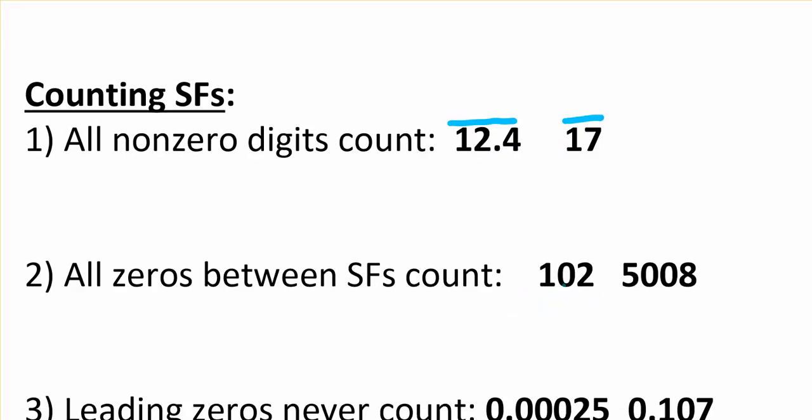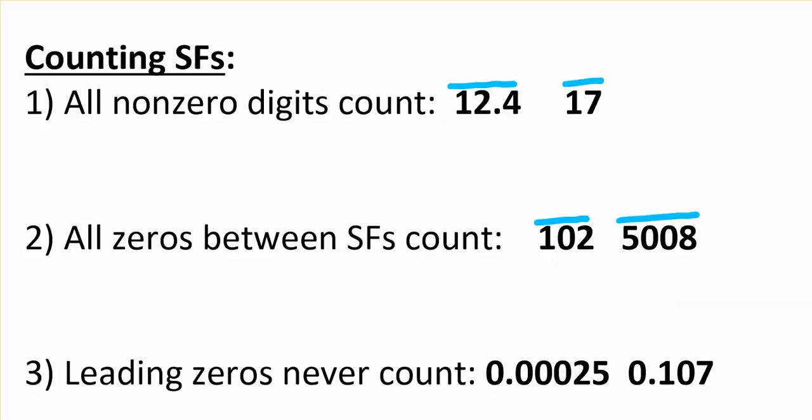Zeroes that are sandwiched count, so all of these count as significant figures. It doesn't matter here that there's more than one that's sandwiched. However many are sandwiched in there, they count.